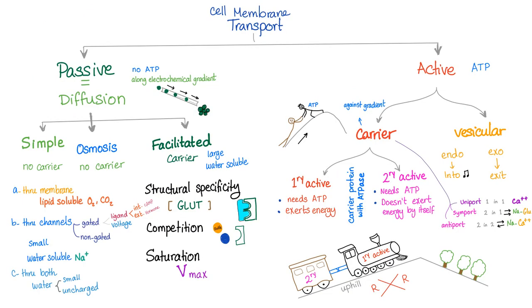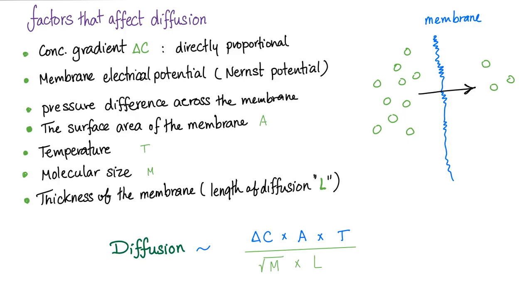In the first video of the series, we have learned that osmosis is a subtype of simple diffusion. No energy needed, no carrier needed. So, what are the factors that affect diffusion? Any type of diffusion. Diffusion is directly proportional to the concentration gradient. The higher the gradient, the greater the diffusion. Also, directly proportional to the surface area of the membrane. The greater the surface area, the better the diffusion.